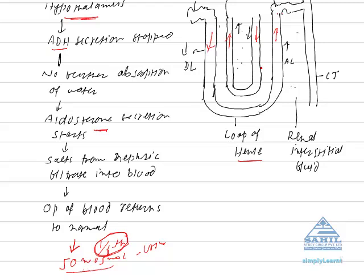After ultra-filtration, the maximum amount of ultra-filtrate is absorbed in the PCT. After selective absorption in the PCT, the nephric filtrate becomes isotonic to blood plasma, meaning the osmotic concentration of nephric filtrate and the osmotic concentration of blood become equal — 300 on both sides. So at this level, the nephric filtrate is isotonic to blood plasma.